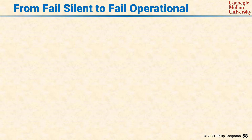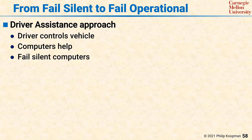A significant architectural distinction between driver assistance and automated driving systems is how failures are handled. For driver assistance features, it's normally sufficient for those features to fail silent. What this means is that if the driver assistance feature cannot operate properly, it needs to detect that it has a problem and then shut down that feature so that the driver can continue to drive without the feature causing problems. It's sufficient for the computer to fail silent and not affect vehicle operation if there's a problem.